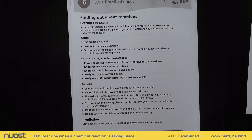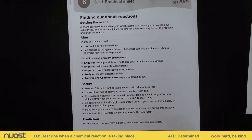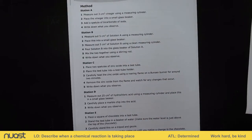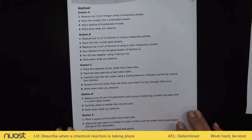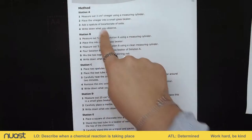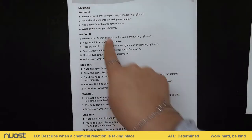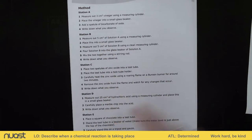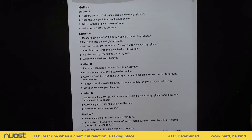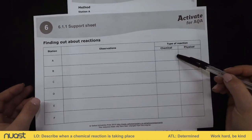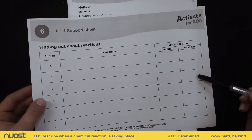You should have your prediction done now. We're going to have a look through the method. The way this practical is laid out is we're going to have different stations — stations A to F — which are little practicals, and after each one we're going to come to a conclusion about whether it has shown a chemical or a physical change.